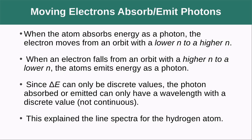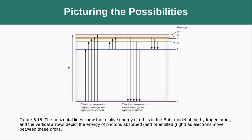So what makes it move from one orbit to another? That is when an atom absorbs energy in the form of a photon. The electron moves from an orbit with lower n value to a higher n value. When an electron falls from an orbit with a higher n value to a lower n value, it's going to emit a photon. And since delta E can only be discrete values, the photon absorbed or emitted can only have a wavelength with a discrete value. It's not going to be continuous. This explained the line spectra that they started to see for the hydrogen atom.